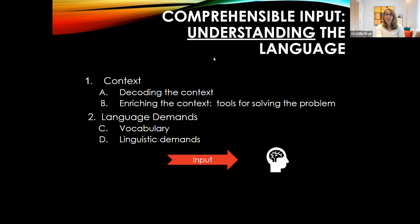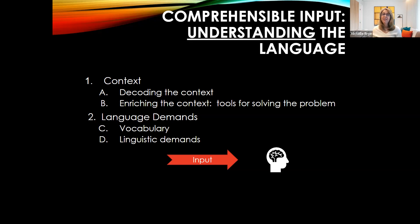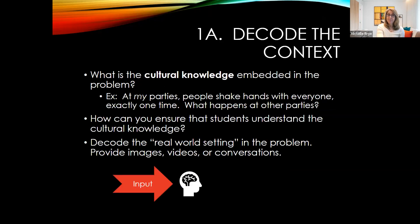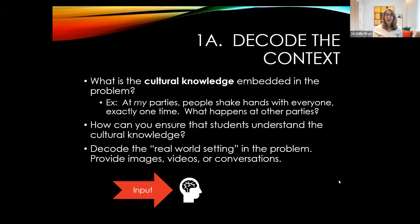Unpacking the four components — first, let's look at input. What we mean by comprehensible input is understanding the language. We have to decode the context, enrich the context, and provide tools for solving the problem. Do the students understand what the problem is asking? Can they relate to how it's situated? We also need to look at language demands — things like vocabulary and linguistic demands. When we look at decoding the context, we look at what cultural knowledge is embedded in the problem.